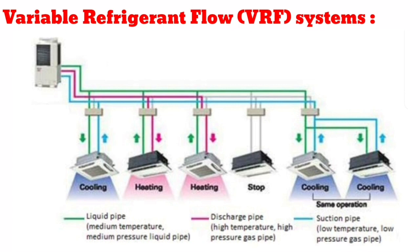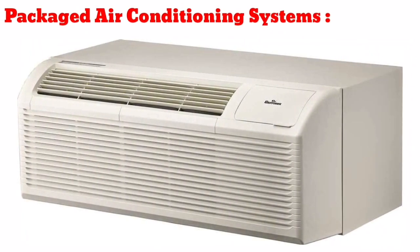The VRF HVAC system's compressor can detect the precise requirements of each zone and send the precise amount of refrigerant needed. As a result, each area of your space is consistently comfortable with well-controlled humidity and no hot or cold spots. Some of these systems are designed to provide simultaneous heating and cooling to different parts of the same building — each indoor unit can be individually selected to provide either heating or cooling.